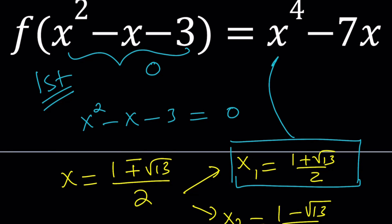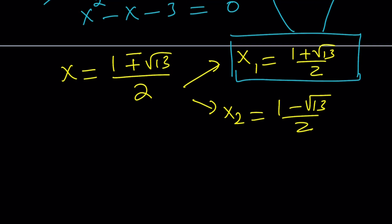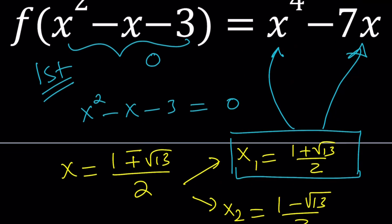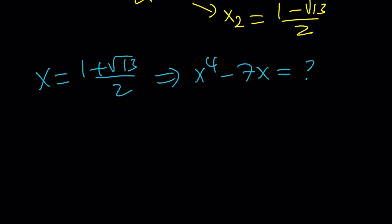So here's what I'm going to do. Since I know that this x value is going to make the left hand side 0, I mean what's inside the parentheses, I'm just going to plug it in on the right hand side. Replace x with 1 plus root 13 over 2 and evaluate x to the 4th minus 7x. How do you do that? You just raise it to the 4th power. But there's another way to do it.